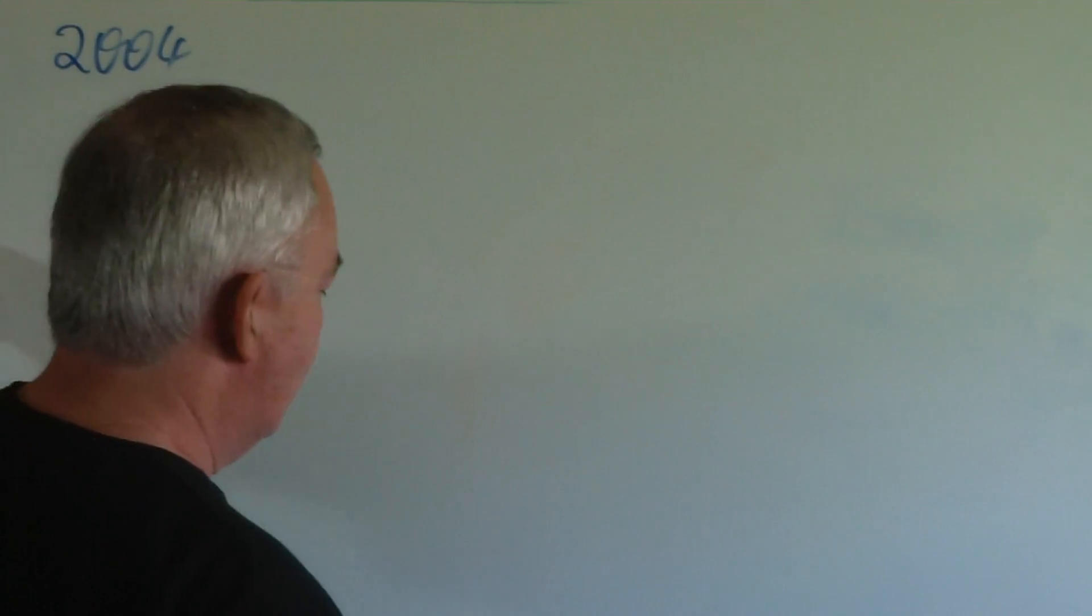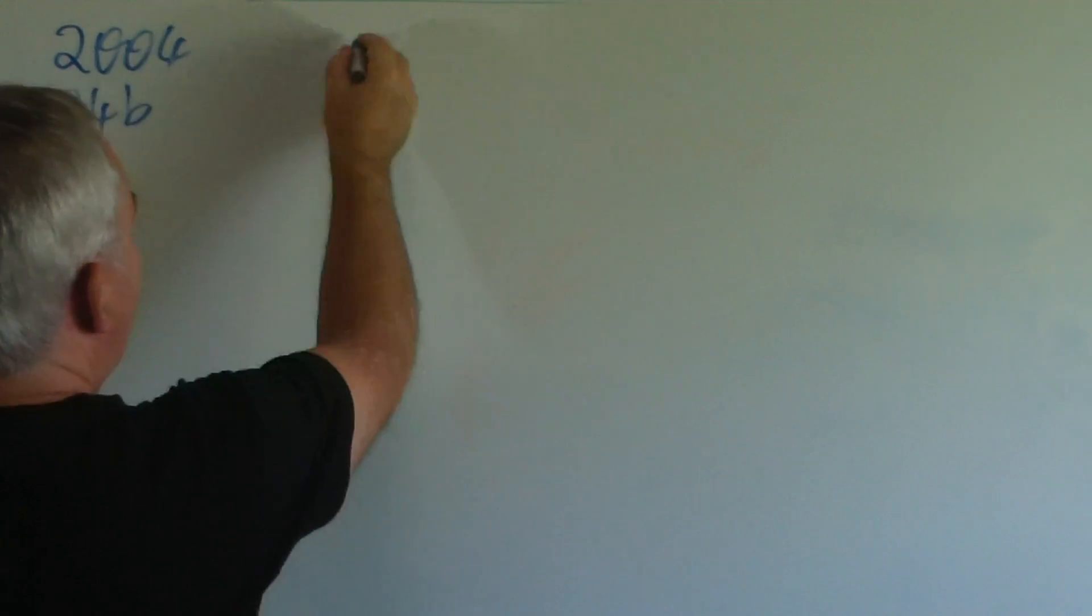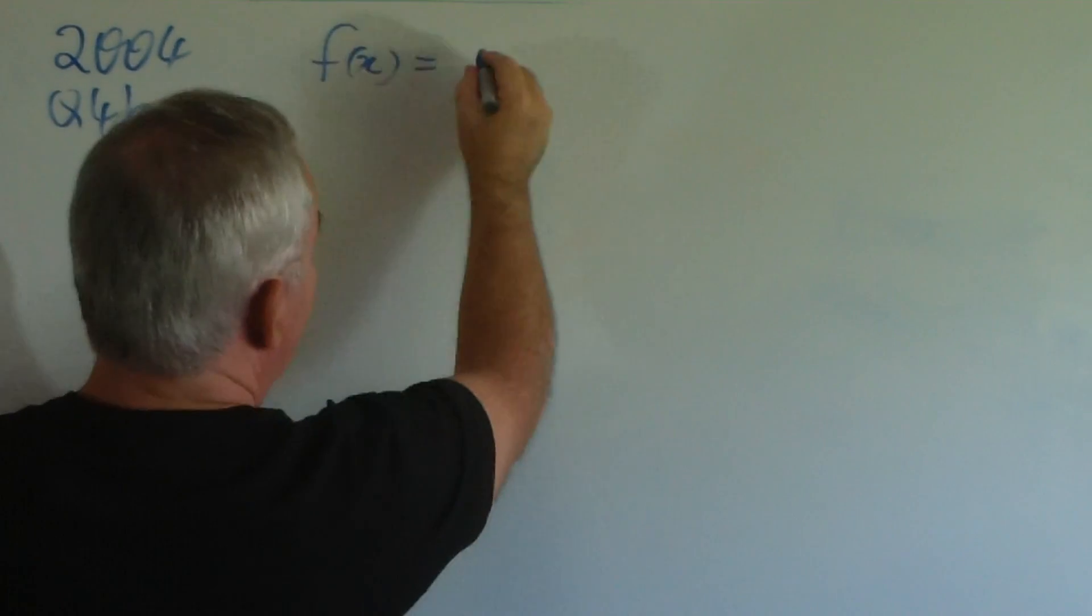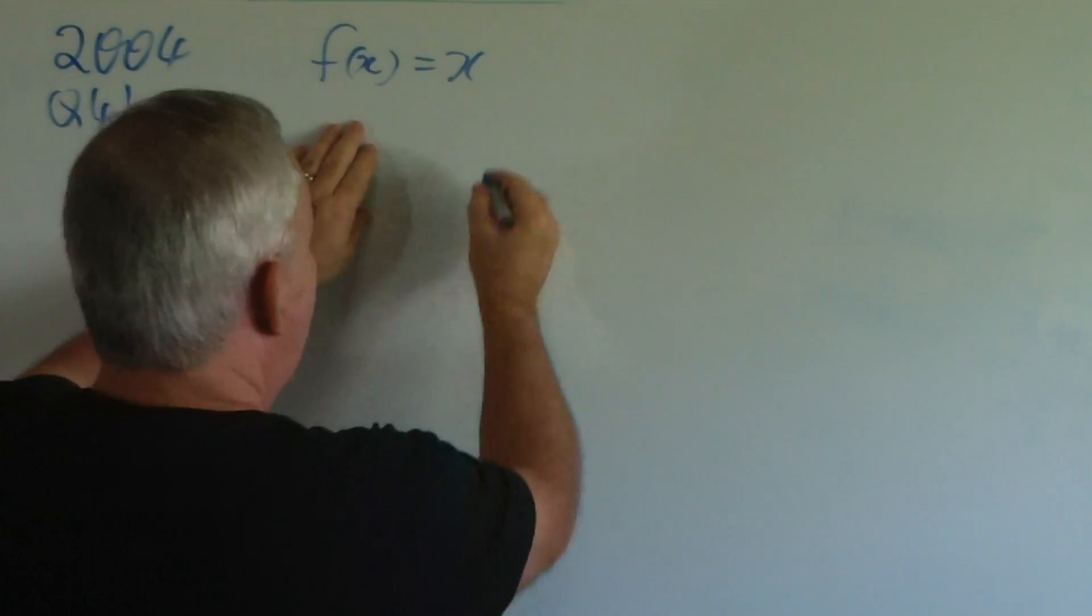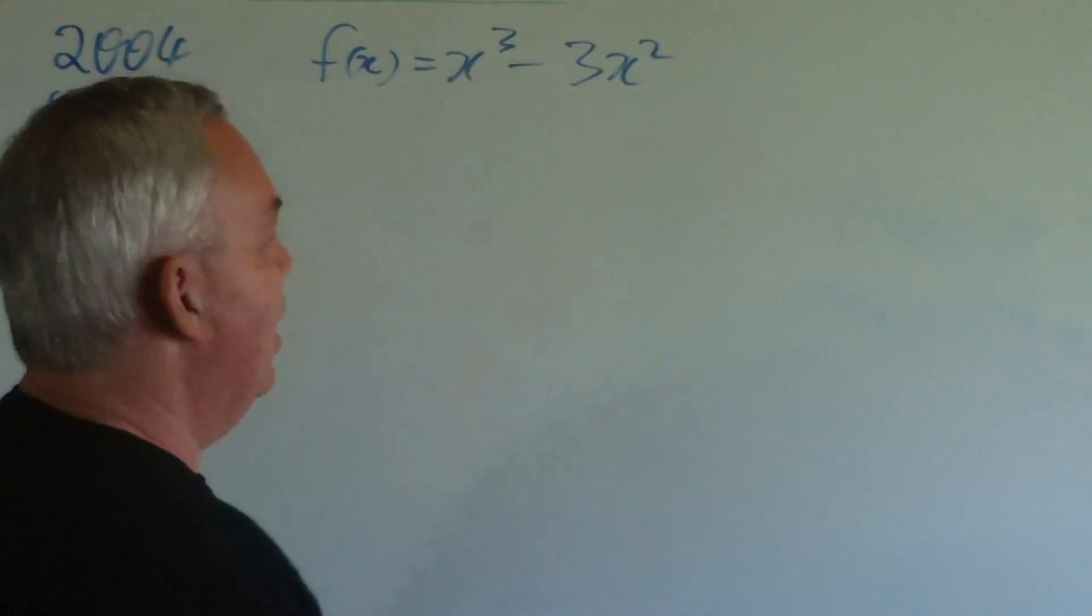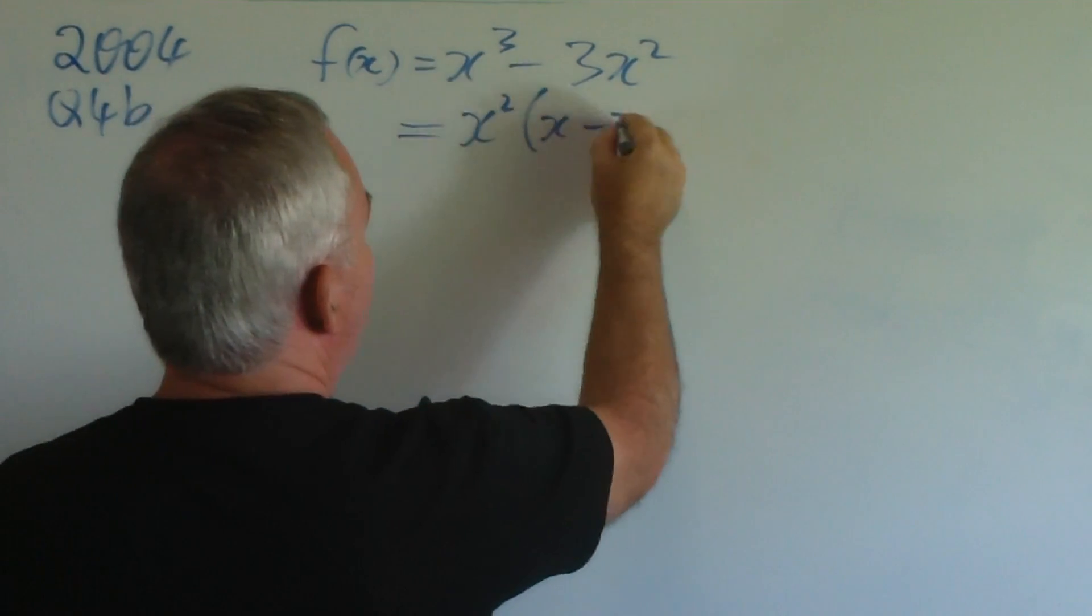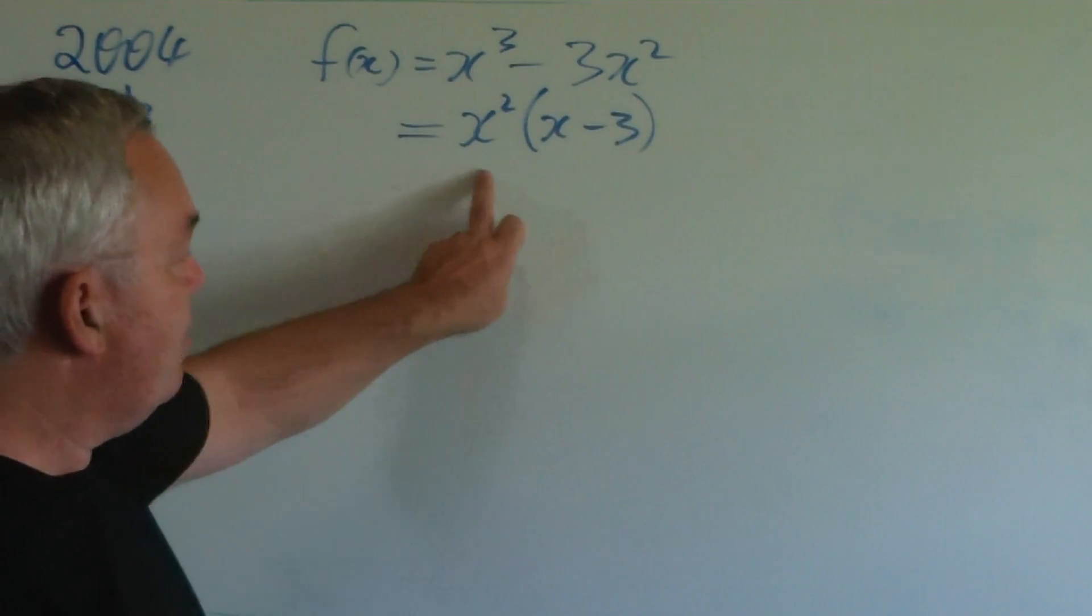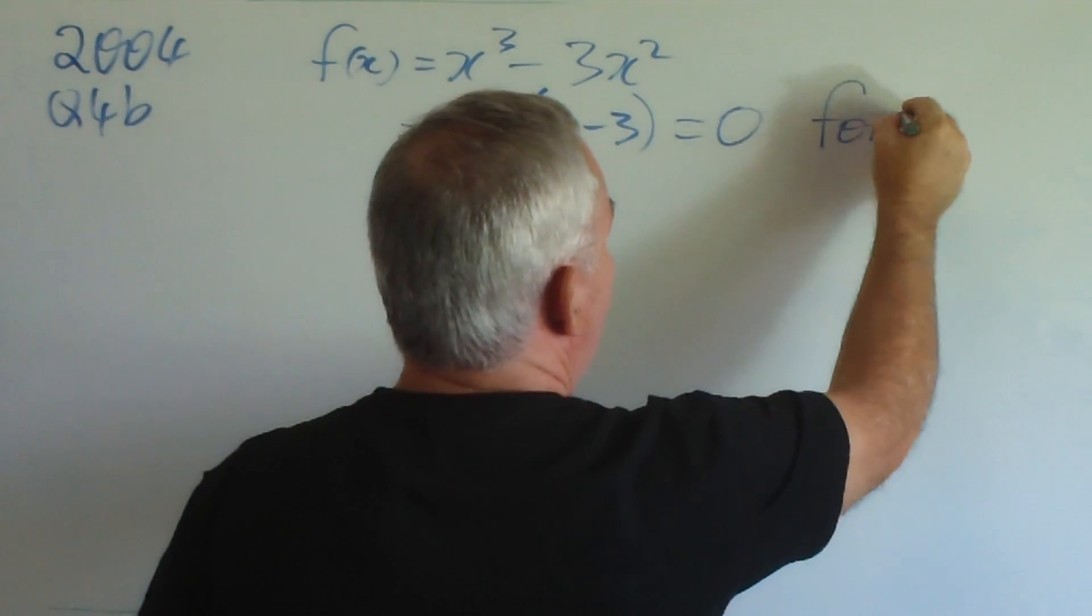I'm going to start with 2004. The 2004 HSC examination, Question 4b was to graph this function. It was not fully factorised: x³ - 3x². As you can see, it has a common factor of x². And to find the roots, we set the function equal to zero.